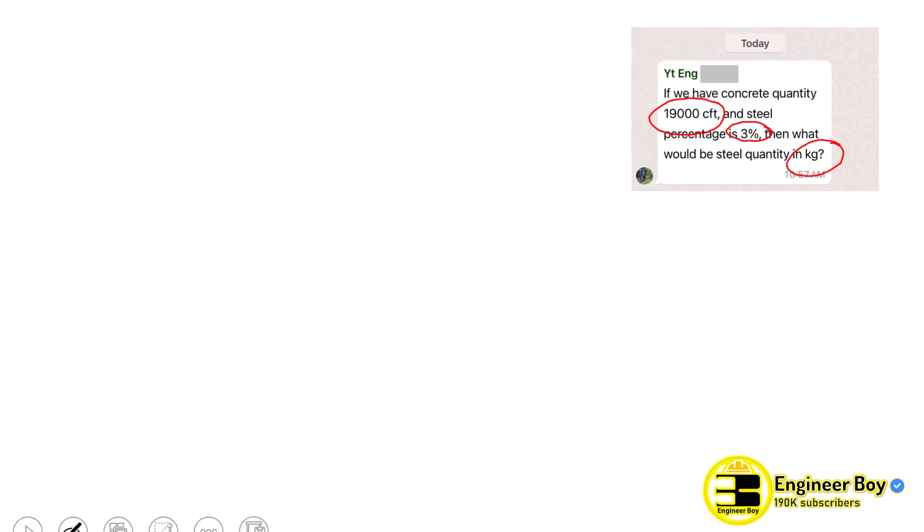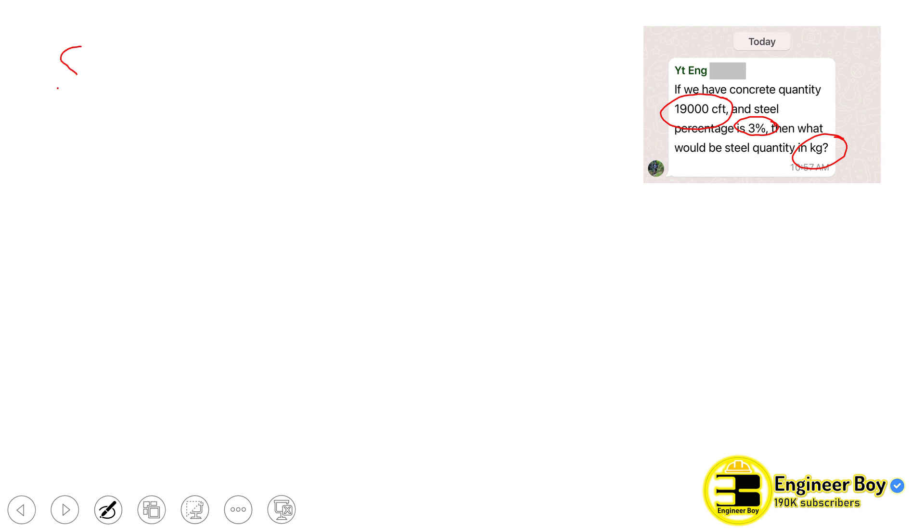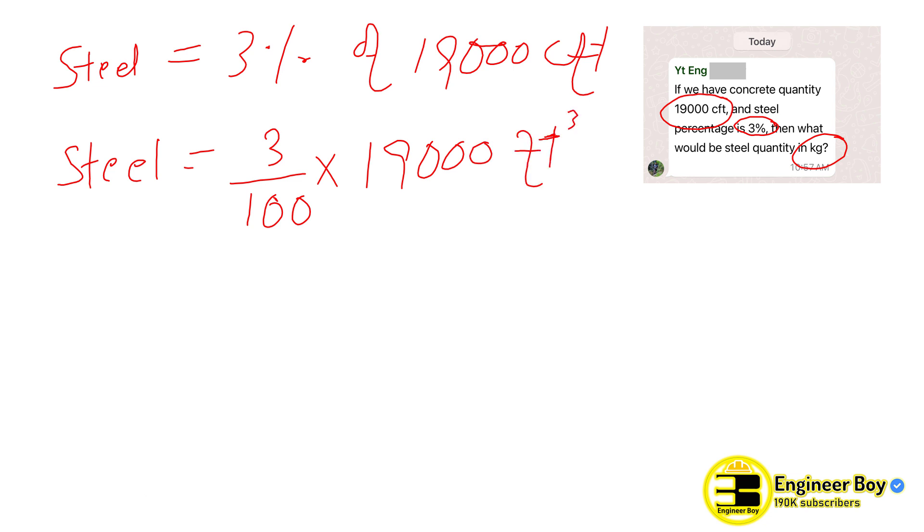Remember, the quantity of steel that is known is 3%, so steel is already known which is 3% of 19,000 concrete work. This is straightforward and a very simple question. So 3% means 3 by 100 times 19,000 cubic feet.